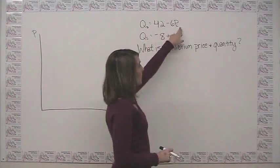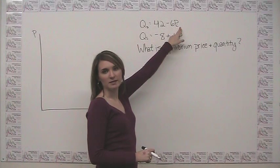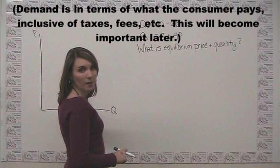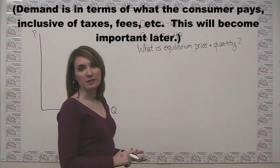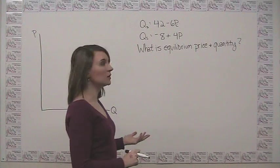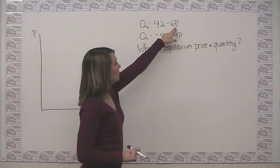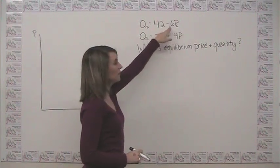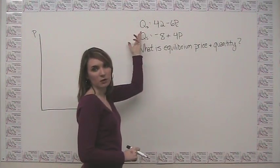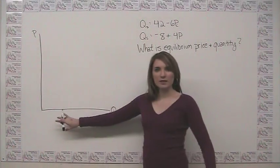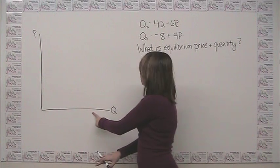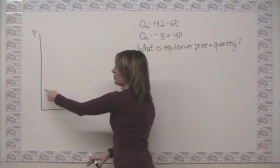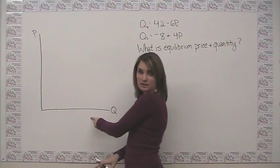We have quantity demanded is equal to 42 minus 6 times the price that the consumer pays. So we can graph that over here by plugging in for the intercepts that we're looking for and then connecting the dots. So for example, when price is equal to 0, quantity demanded is equal to 42 minus 0, which is just 42. So we can represent that point here as when quantity is equal to 42, price is 0. Or maybe more intuitively, when price is 0, which is down here, quantity is equal to 42.